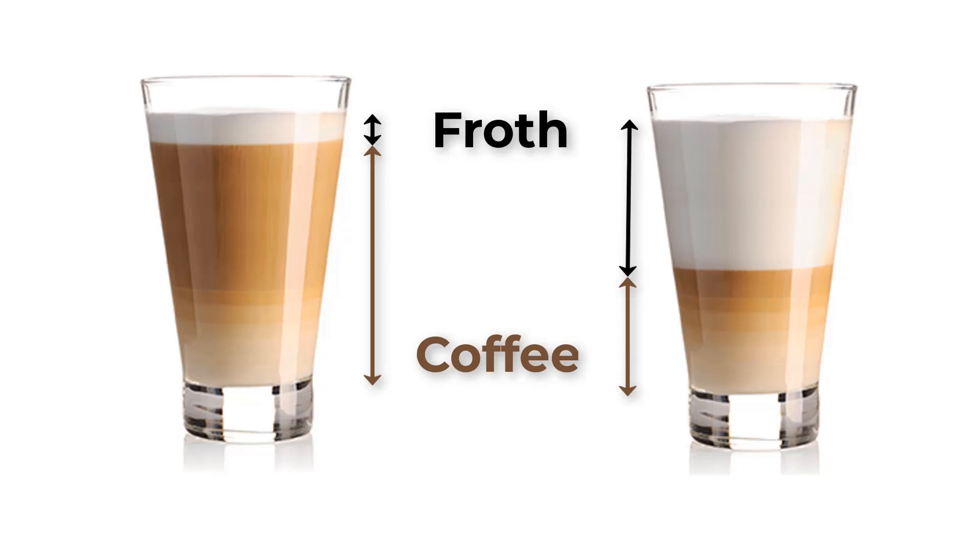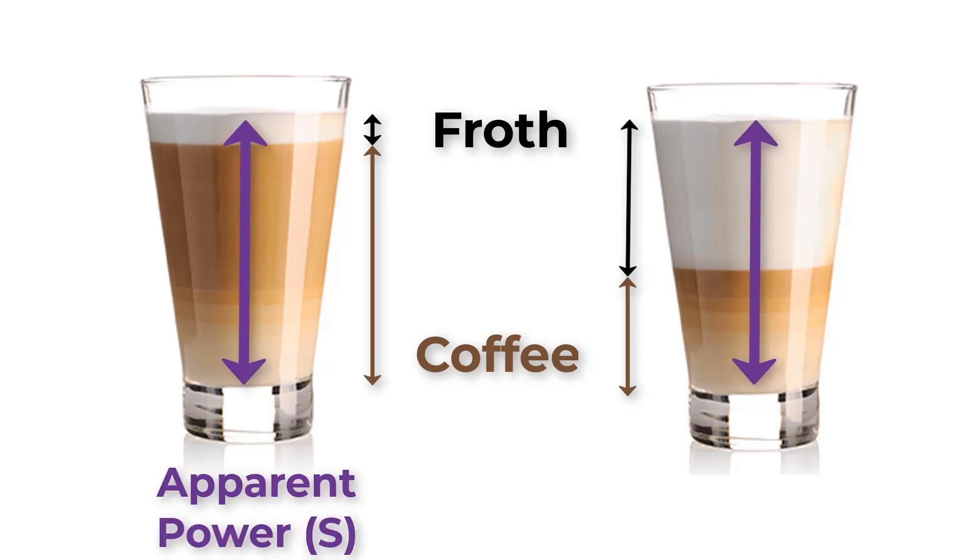So S is just like the cup itself. P is just like the useful and tasty coffee, and Q is like froth which is not useful at all.